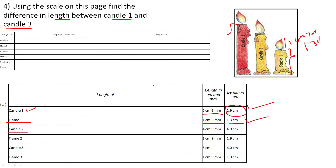Similarly, candle number 3: the length is 6 centimetre, written as 6.0. The flame of candle number 3 is 1 centimetre and 9 millimetre, so 1.9 centimetre.